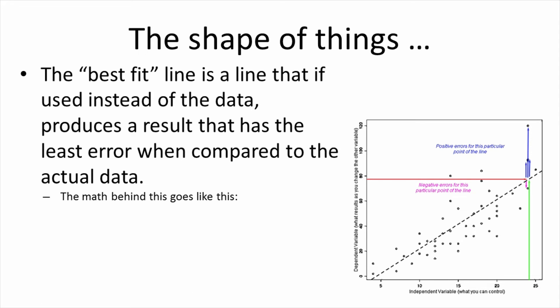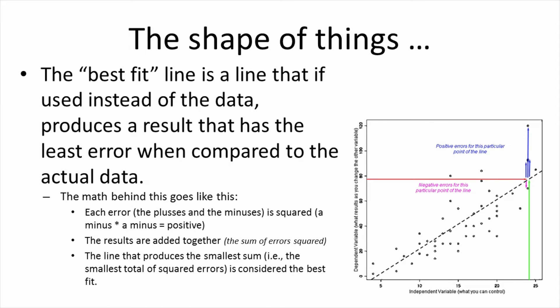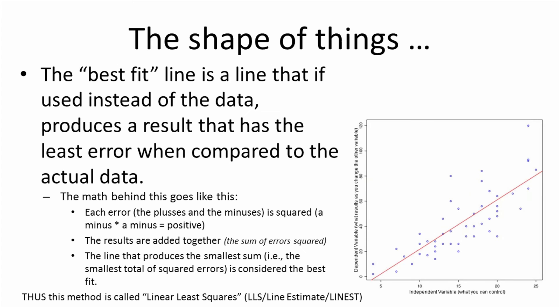There is some complicated math involved to find out what is the best-fit line. Fortunately, most spreadsheet programs and even many calculators have automated this process for you. But it is based on the idea that we start by taking all the errors between the proposed line versus the actual data points. Then we multiply those values by themselves. That is called taking the square of a number. When you do that, you only get positive values. A negative number times a negative number is a positive number, and a positive number times a positive number is a positive number. Then we add up all those numbers. That is to say, we take the sum of the squares of the errors. Then, like a good golf game, we try to find the line that minimizes that sum. The line that produces the smallest sum of the squared errors is considered to be the best-fit line. Thus, this method is called the linear least squares method.